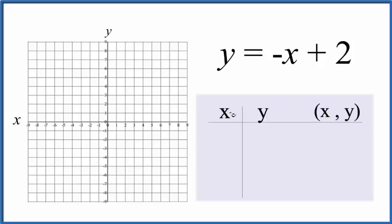For a table of values, we're going to put a value in for x, we get a value for y, and then we'll graph that point. I'd like to start out with 0, because negative 0, that's just 0. 0 plus 2 is 2.